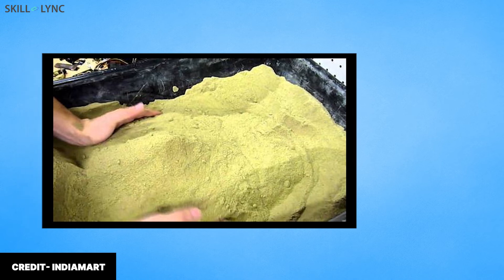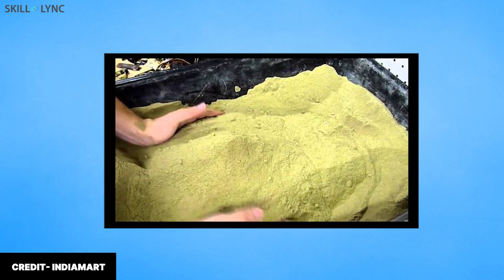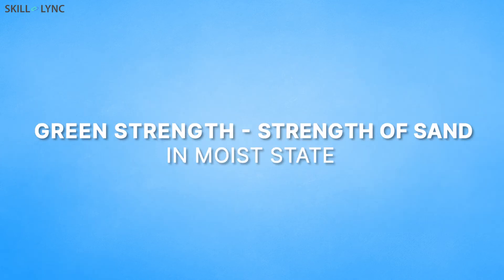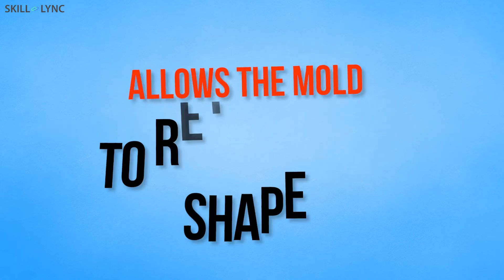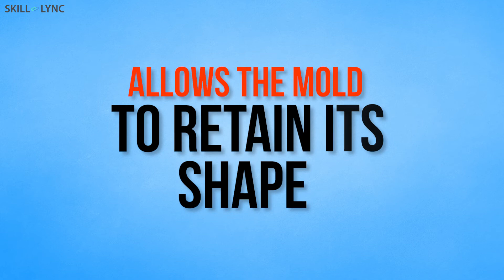Green sand is a type of sand which possesses a high moisture content. Green strength is the strength of the sand in its moist state. Adequate green strength allows the mold to retain its shape during the process.